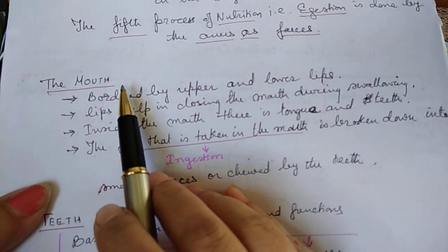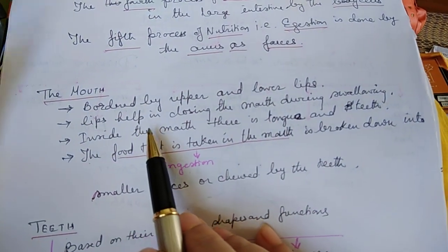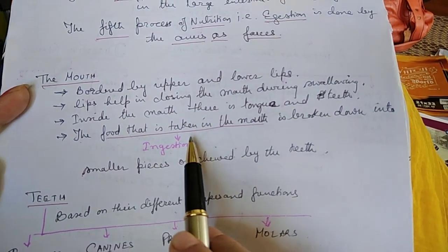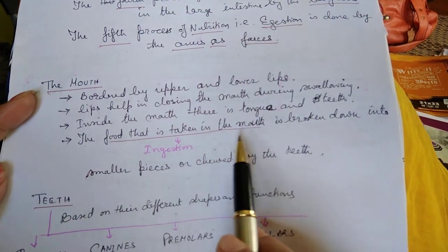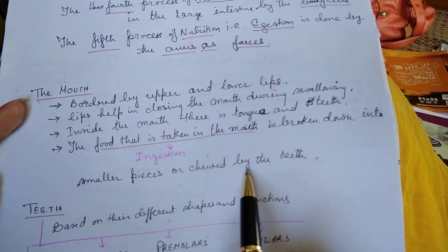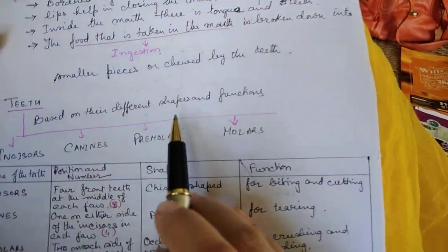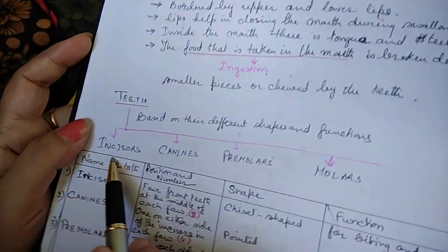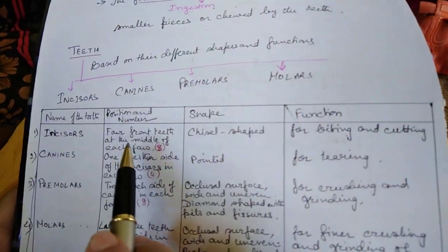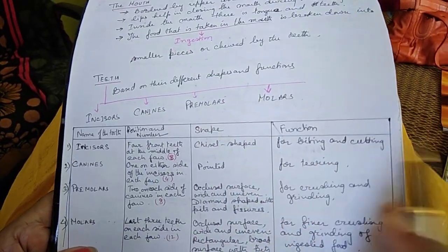The mouth is bordered by upper and lower lips, which help in closing the mouth during swallowing. Inside the mouth there is a tongue and teeth. The food taken into the mouth is broken down into smaller particles — this is called ingestion. Based on different shapes and functions, teeth are classified as incisors, canines, premolars, and molars. Incisors are the front four teeth in the middle of each jaw; they are used for biting and cutting.